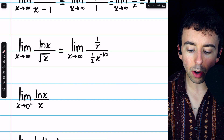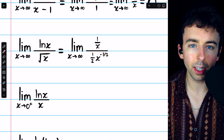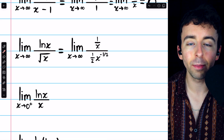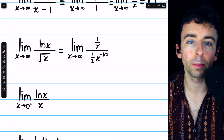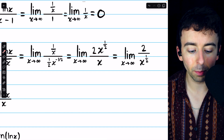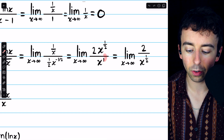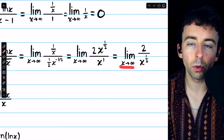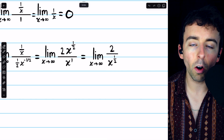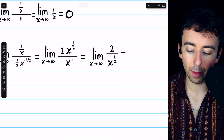Let's simplify this a little bit. With 1 over x in the numerator, we can put that x down in the denominator. In the denominator, we have x to the negative 1/2, which we can move to the numerator by making the exponent positive. We also have 1/2 in the denominator, which moves to the numerator as a factor of 2, since dividing by 1/2 is the same as multiplying by 2. Doing that rewriting, we have the limit as x goes to infinity of 2x to the 1/2 divided by x. Simplifying the exponents — x to the 1 in the denominator and x to the 1/2 in the numerator — we're left with 2 divided by x to the 1/2. The numerator is a fixed number 2, while the denominator, x to the 1/2, gets arbitrarily large, so this limit is equal to 0.